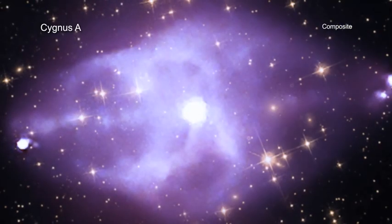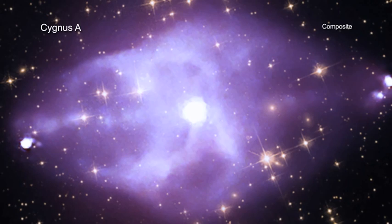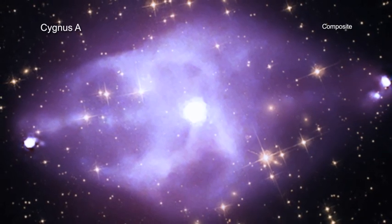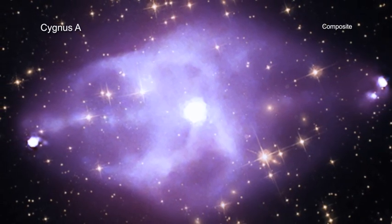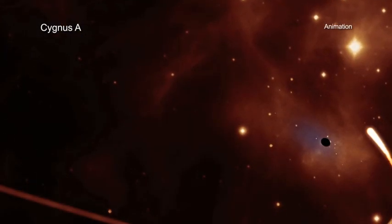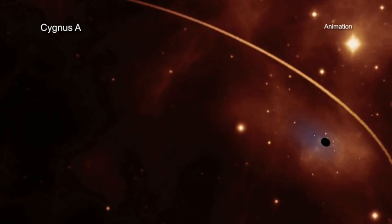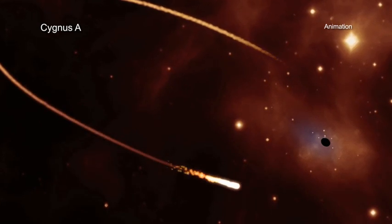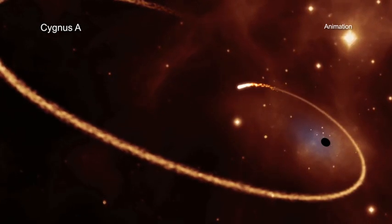Cygnus A is a large galaxy that sits in the middle of a cluster of galaxies about 760 million light-years from Earth. A supermassive black hole at the center of Cygnus A is rapidly growing as it pulls material swirling around it into its gravitational grasp.